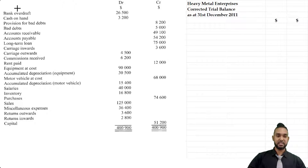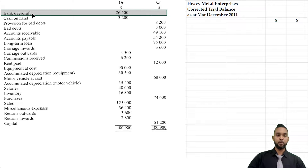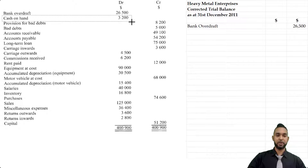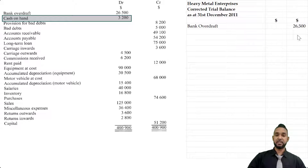Let's take a look at the first item: bank overdraft. Bank overdraft is a liability and liabilities have credit balances, but we are seeing it put in the debit column. So we're going to put it in the credit column where it belongs. Next we have cash on hand — cash is an asset. Assets have debit balances, so we're going to see that in the debit column.